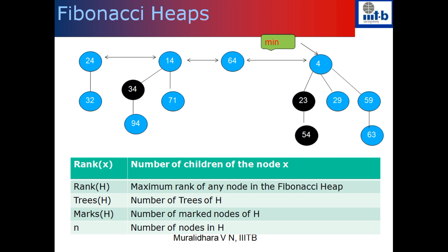The number of trees in the heap h is 4 in this example. Some nodes are going to be marked nodes — in this example there are 3 marked nodes: 34, 23, and 54. The importance of marked nodes will be explained when we do specific operations on the Fibonacci heap. When implementing, there is a boolean flag called 'marked' — if true, the node is a marked node. The number of marked nodes is called marks(h), and in this Fibonacci heap there are exactly 3 marked nodes. The variable n denotes the total number of nodes in h, which is 13 in this example.